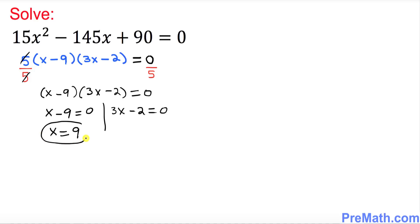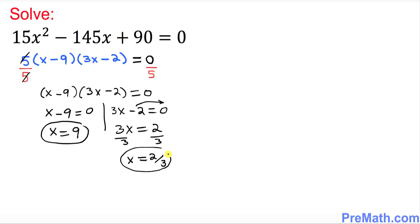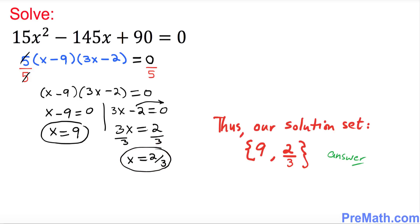From x minus 9 equals 0, we get x equals 9. From 3x minus 2 equals 0, move the negative 2 to the other side to get positive 2, then divide both sides by 3: x equals 2 over 3. So our solution set is {9, 2/3}. Thanks for watching, and please subscribe to my channel for more exciting videos.